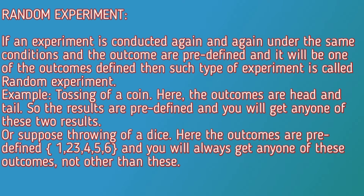Suppose you are tossing the coin in India, then also it will give you head or tail. Or suppose you are tossing in Russia, China, or Korea — wherever — it will give you the same result. So this is called a random experiment. When an experiment is conducted again and again but still gives you the same set of outcomes, it is called a random experiment.